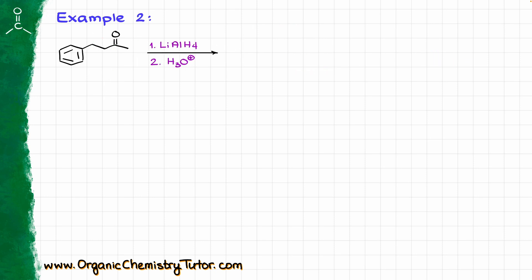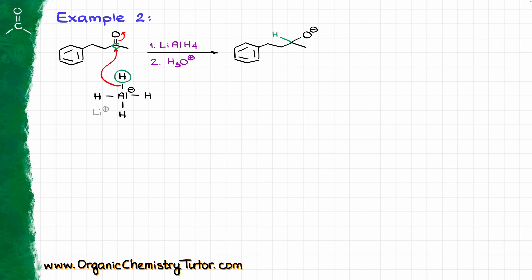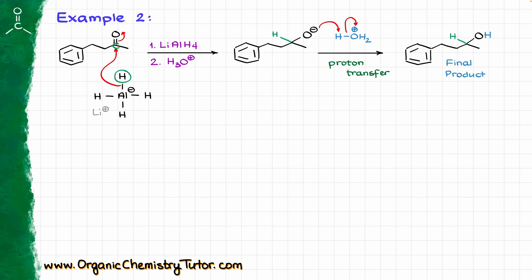Now let's take a look at something a little bit more complex. I have this ketone reacting with lithium aluminum hydride, and then we are going to do our acidic workup. Step number one, I'm going to draw my lithium aluminum hydride and do the nucleophilic attack from the aluminum hydride onto the carbonyl, making a bond between the hydrogen and the carbon of the carbonyl, which is going to result in the formation of the following intermediate. Then I'm going to bring my acid for the acidic workup, grab the proton from our acid, and that is going to give us the final product — a secondary alcohol in this particular case.